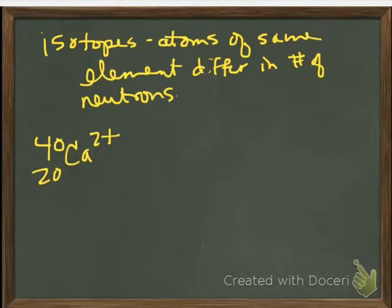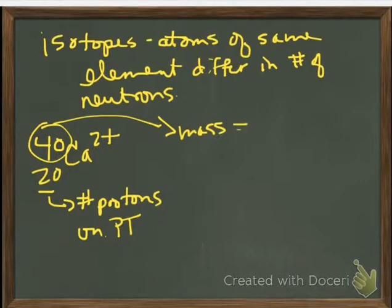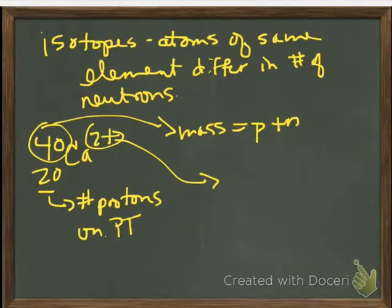So, for instance, here's an isotope, calcium-40. Okay, it has 20 protons. That is the number at the bottom. You can find that on the periodic table. Well, 40 is the mass number, and it's written at the top of the atomic number on the left-hand side. That is protons plus neutrons.